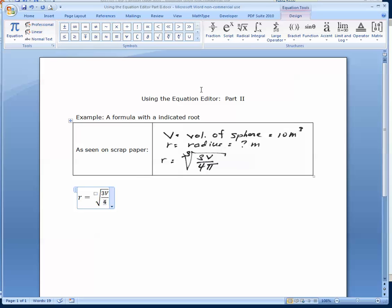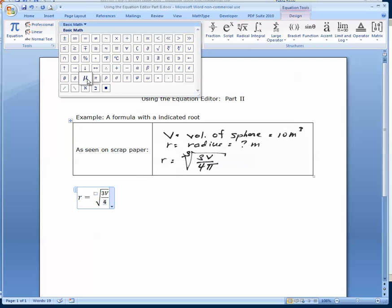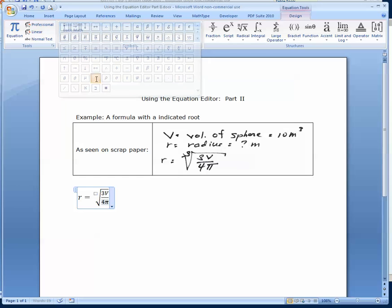Now we need the Greek letter pi. So we go up to the Symbols drop-down, find the Greek letter pi, and click on it.